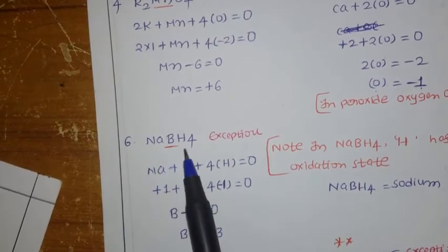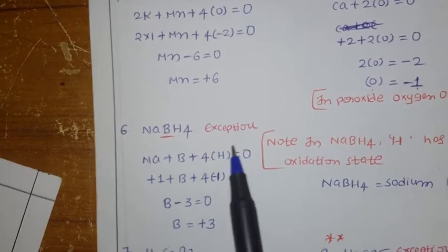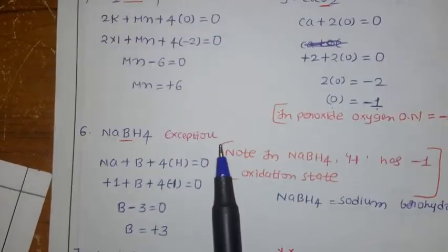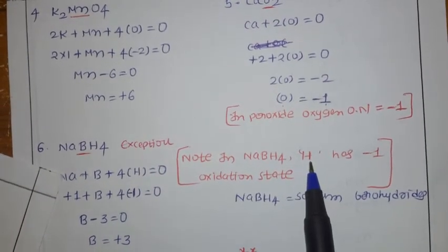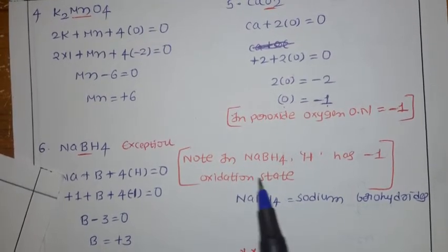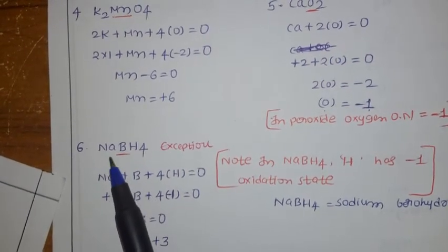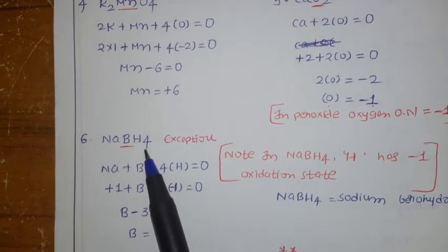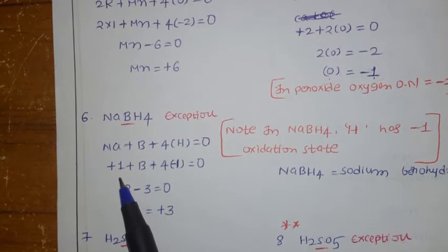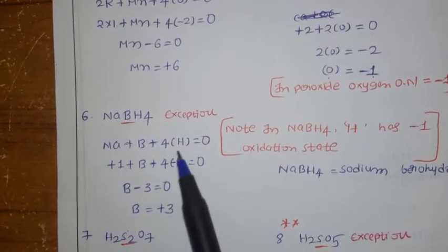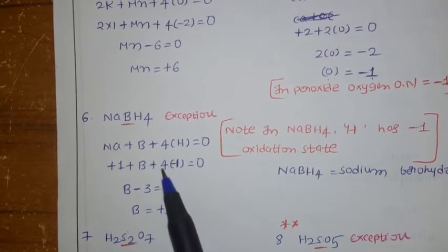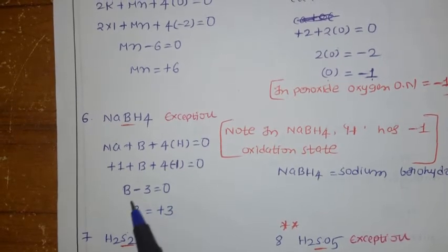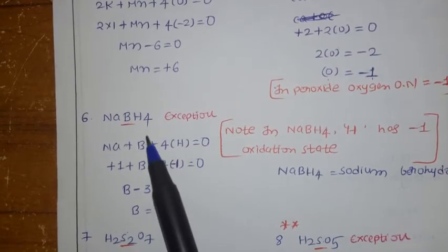Exception case: sodium borohydride NaBH4 — this was also an exam question last year. In metal hydrides, hydrogen has minus 1 oxidation state. For NaBH4: 1 sodium plus 1 boron plus 4 times minus 1 (hydrogen) equals 0. Sodium is group 1, so plus 1. Simplifying: plus 1 plus B minus 4 equals 0, so B equals plus 3. Boron oxidation state in NaBH4 is plus 3.